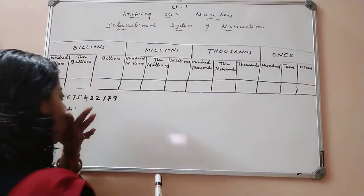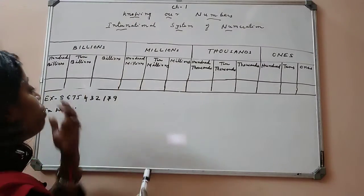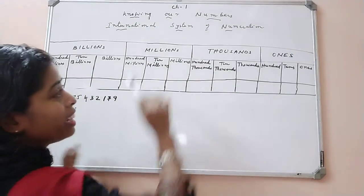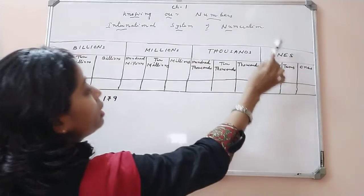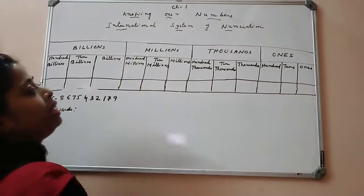Then comes millions period, and then we have billions period. Once again, I am repeating: ones period, thousands period, millions period and then billions period.